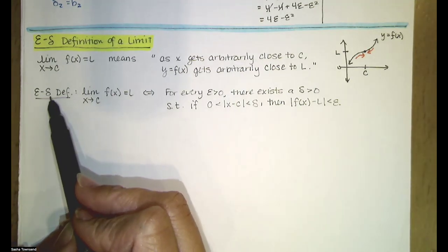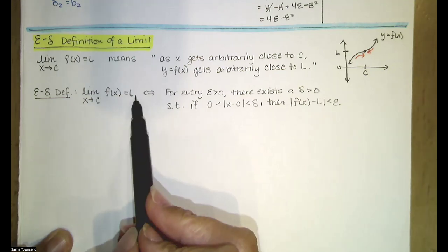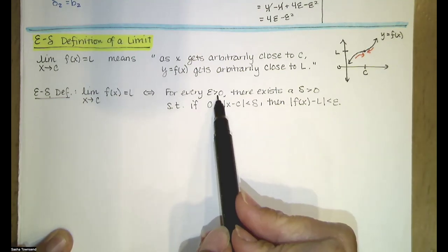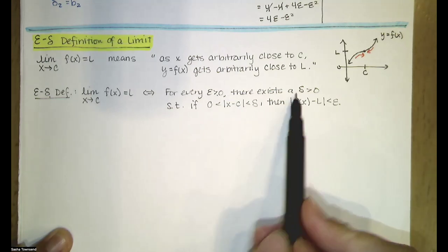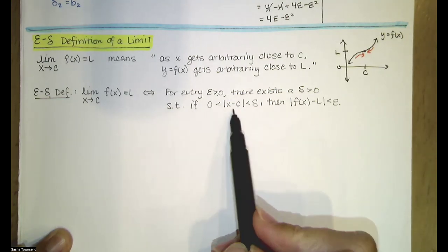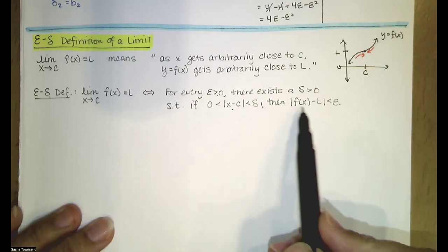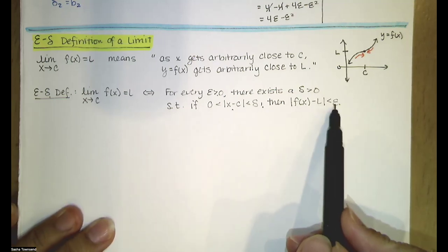We can do so with the epsilon-delta definition. This means that for every epsilon greater than zero, there is a delta greater than zero, such that if zero is less than the absolute value of x minus c, which is less than delta, then the absolute value of f(x) minus L is less than epsilon.